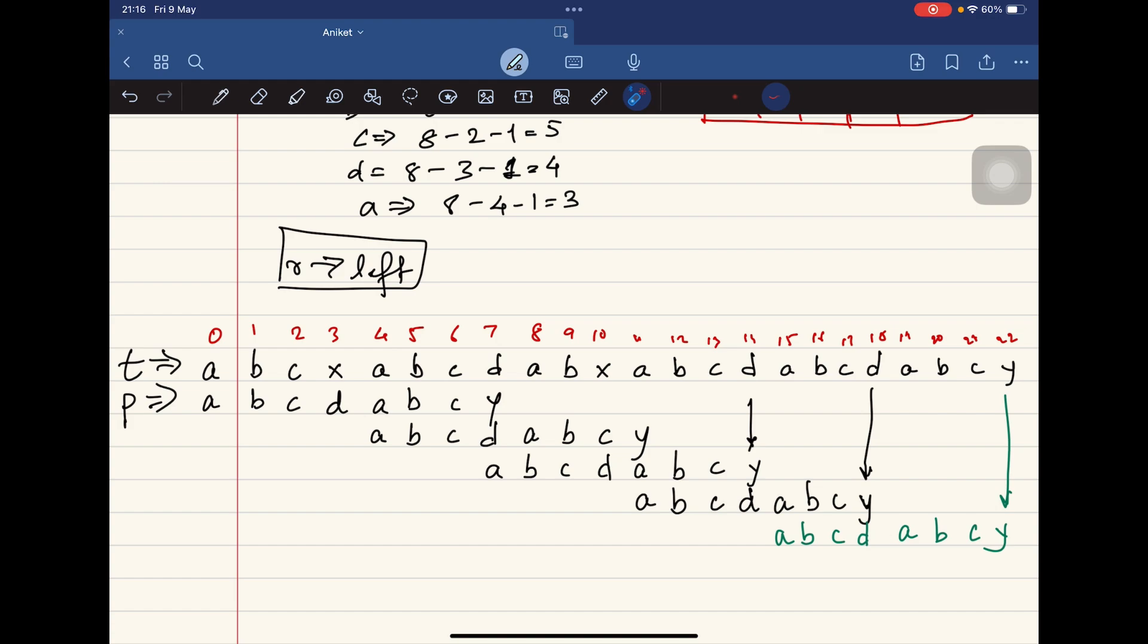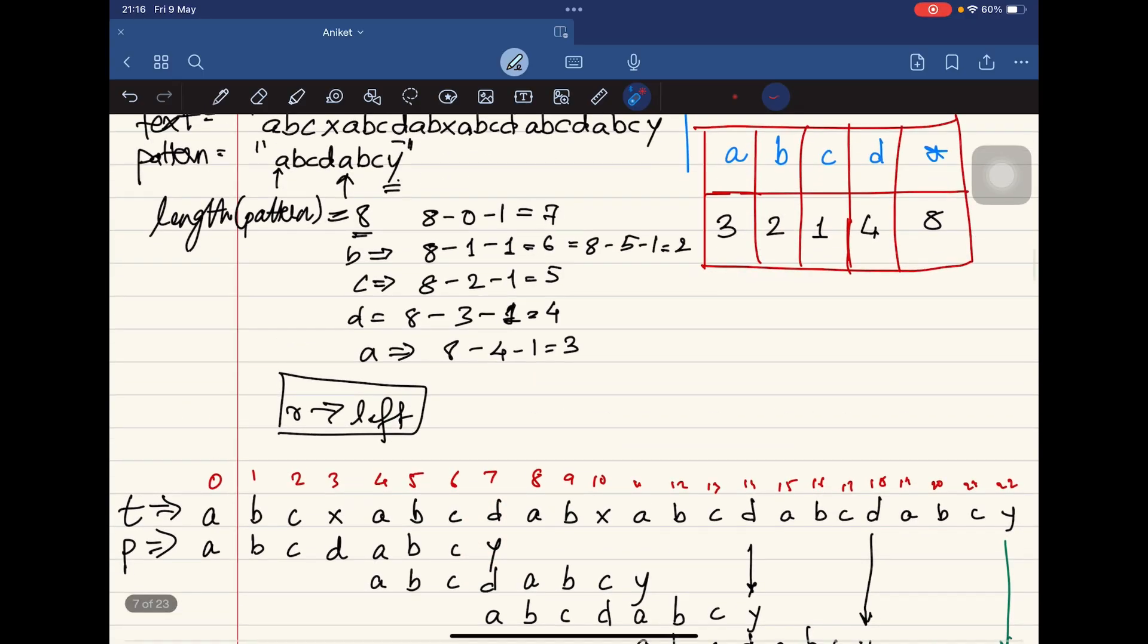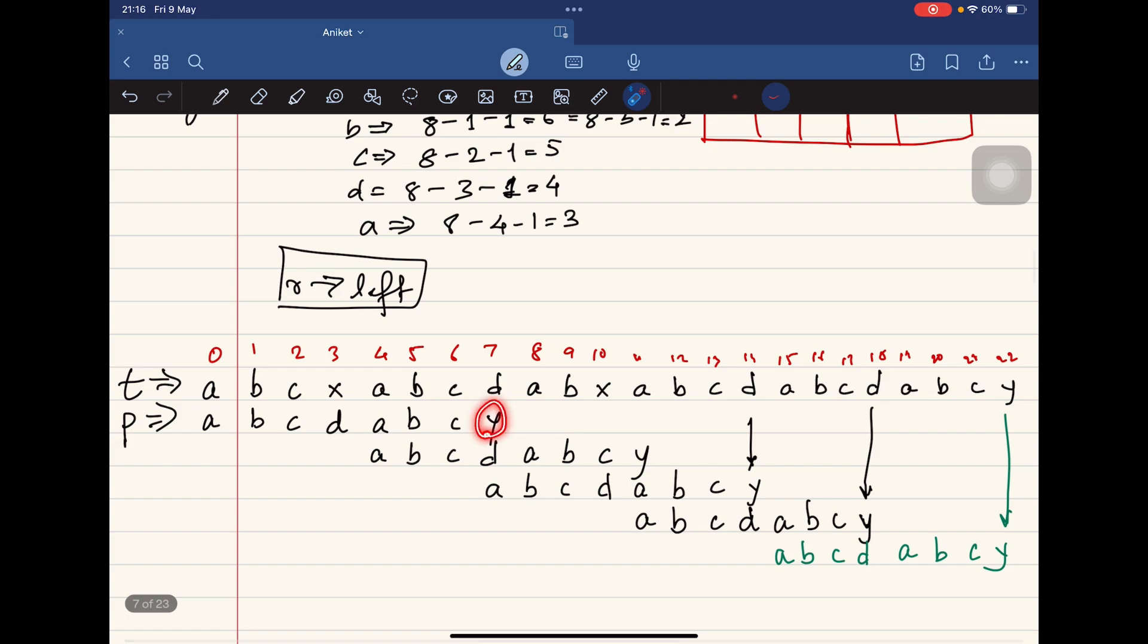But the thing is there are things that already match, and there is a partial pattern already existing. So there could be a pattern now that starts from this particular A. So we need to skip these four. Now the number four comes from this particular value from the bad match table. So we found a mismatch, we come here, we check the value of D in the bad match table, which is 4.